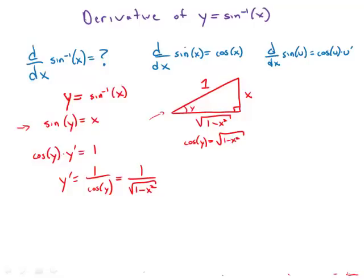This is the derivative of the sine inverse of x. The derivative of sine inverse of x equals 1 over root of 1 minus x squared.